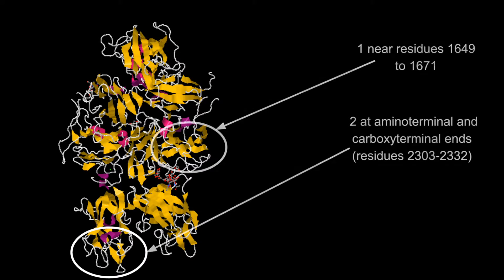Three regions of the Factor VIII light chain are thought to be bound to von Willebrand factor with high affinity.